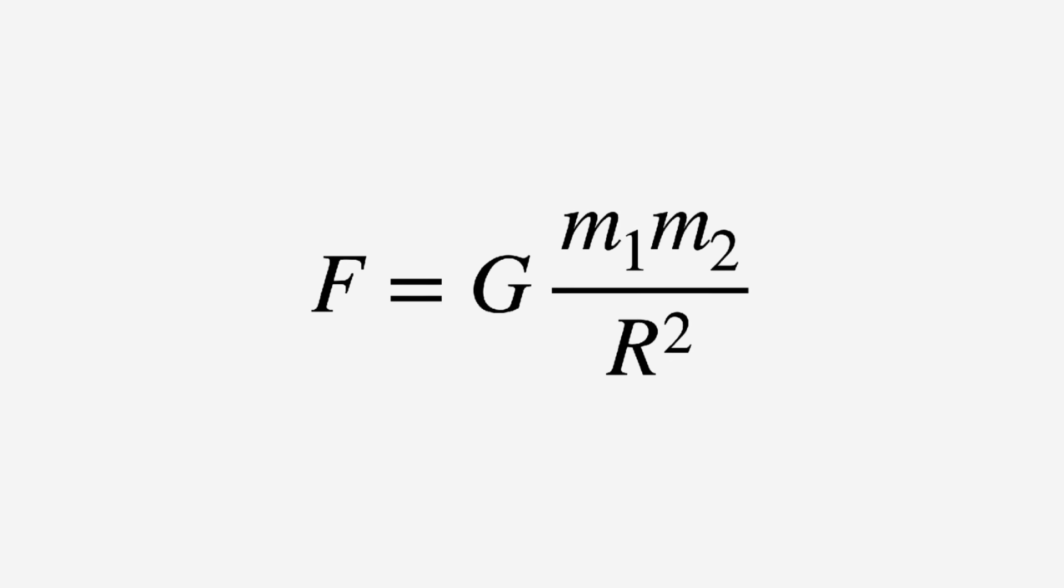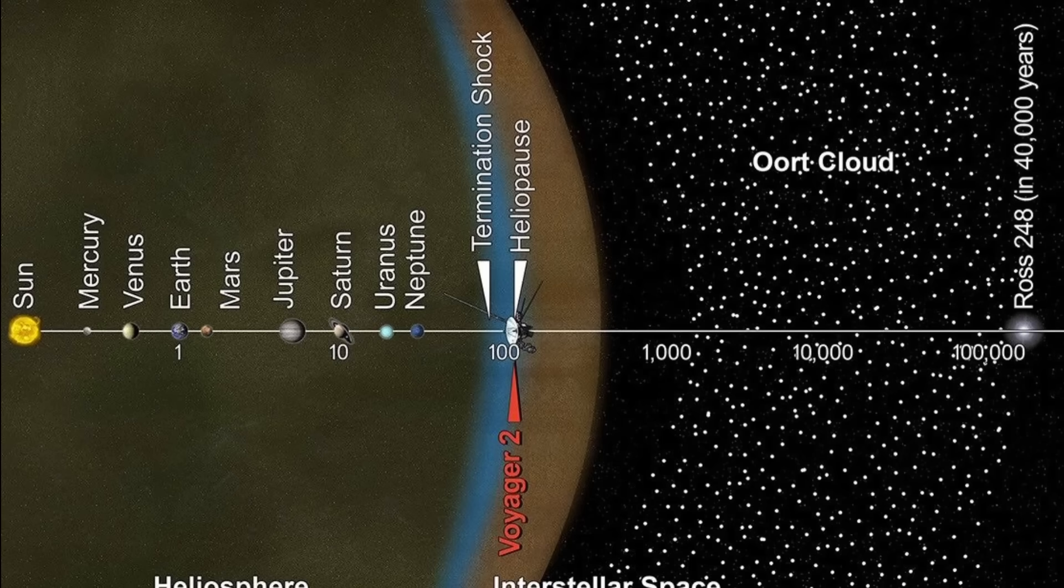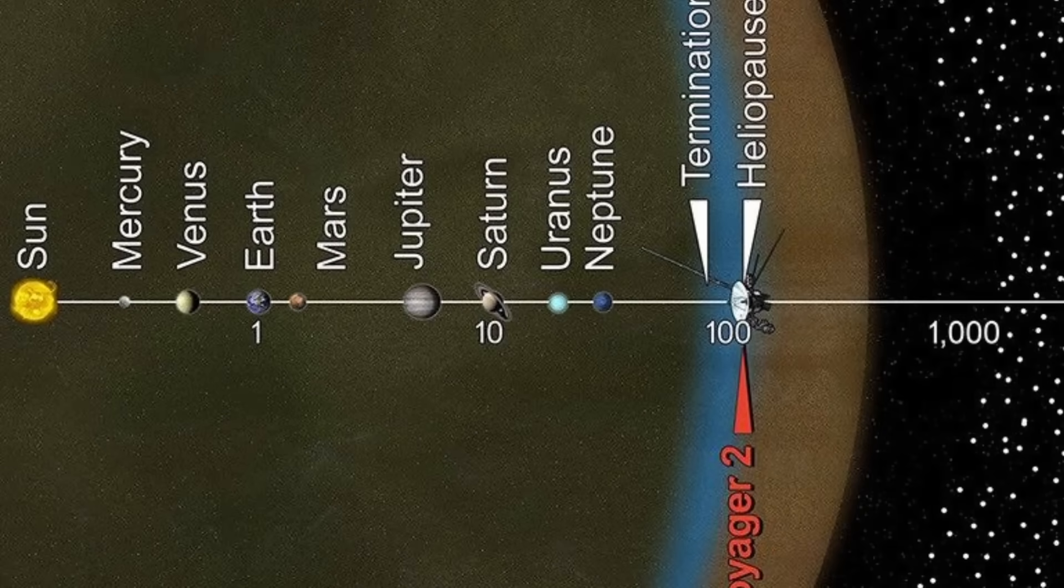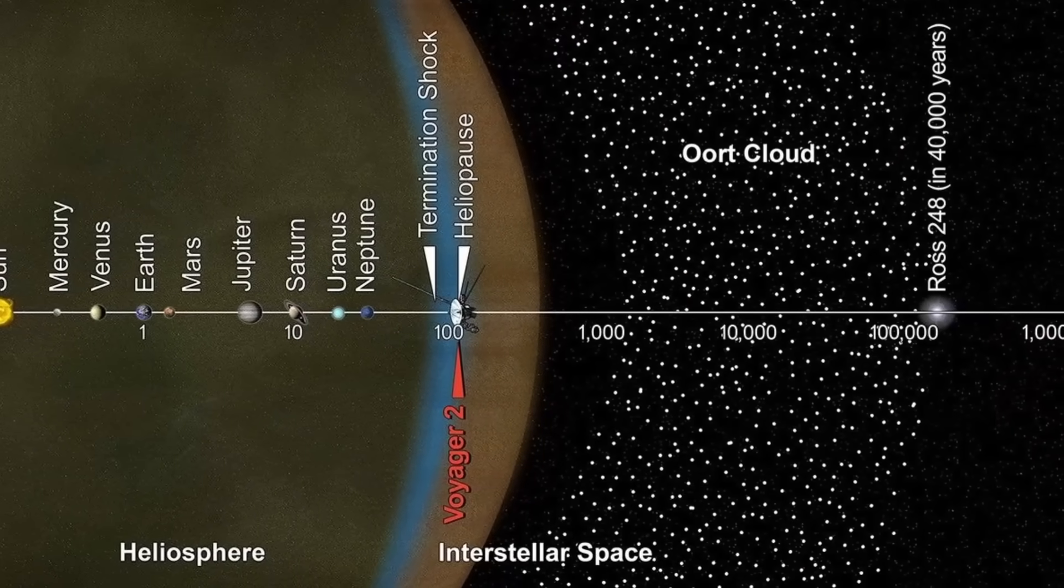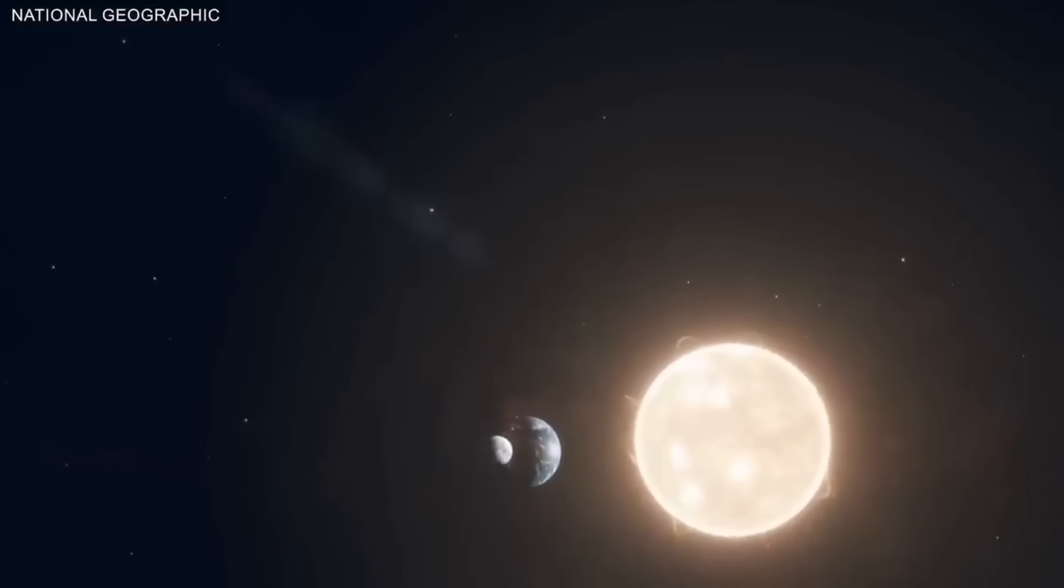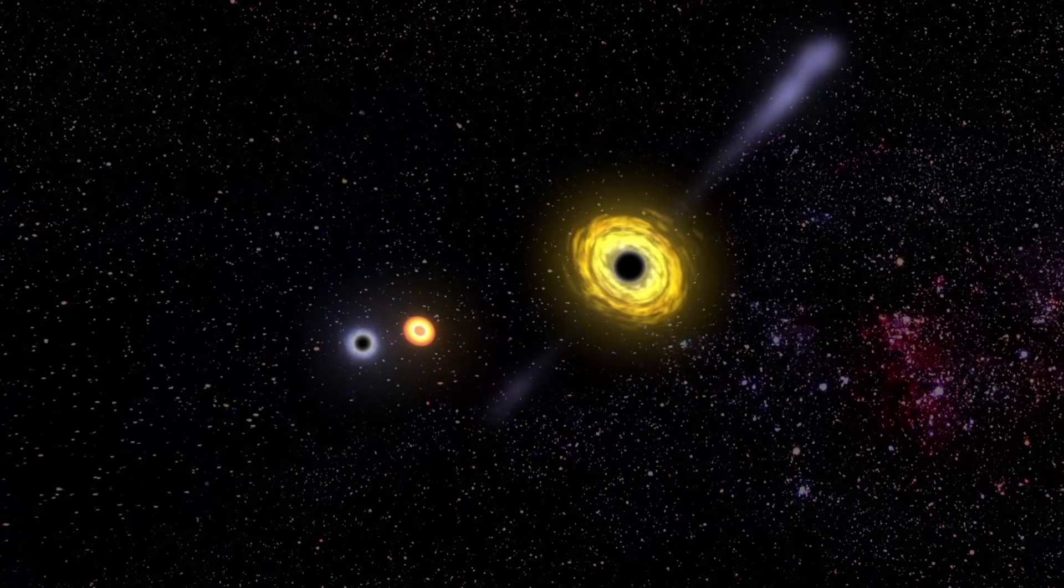According to the laws of gravity, its strength weakens with distance. For example, the Sun's gravitational pull on Mercury is much stronger than on distant objects like Pluto or those in the outer edge of the solar system. This principle isn't limited to our solar system. It applies universally, from stars and galaxies to massive black holes.